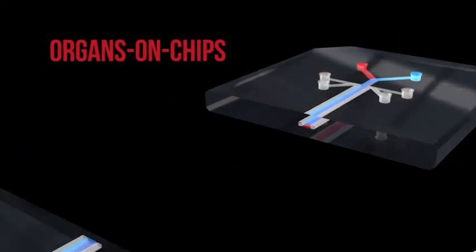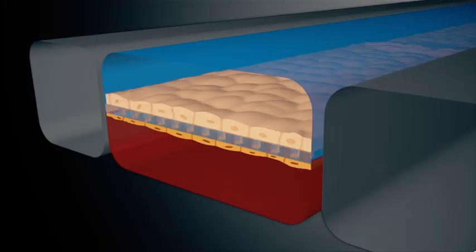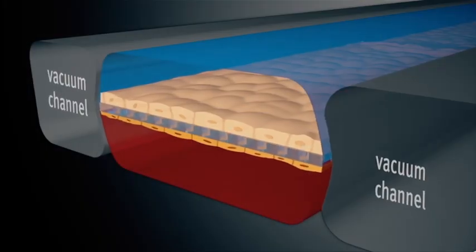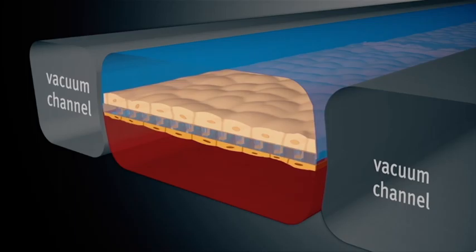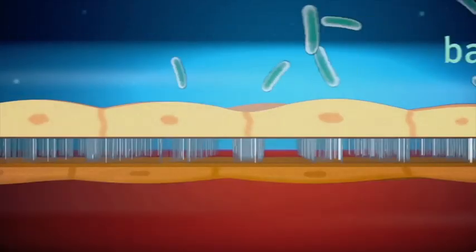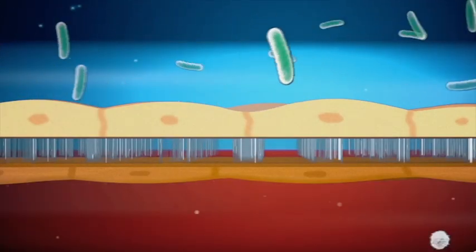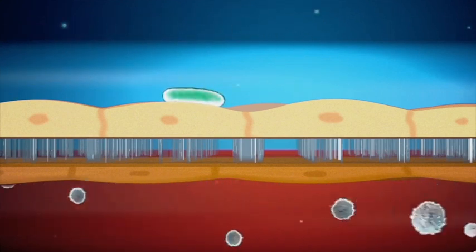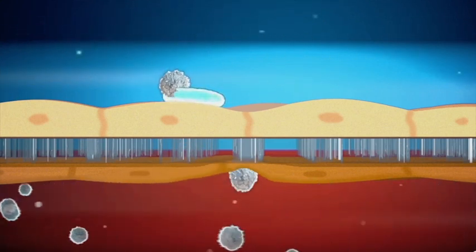Over the past six or seven years, we've been able to develop organs on chips, which are little miniaturized vascular networks created with computer microchip manufacturing that are lined by living cells to recapitulate the normal physiology of living human organs, the complex functions, including inflammation and infection.